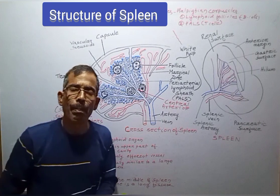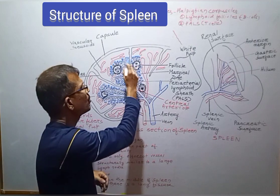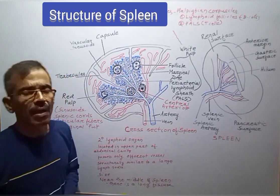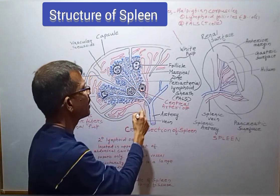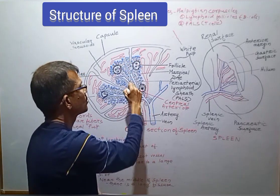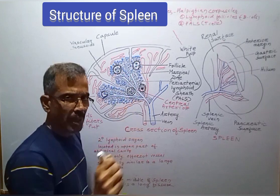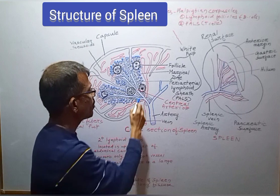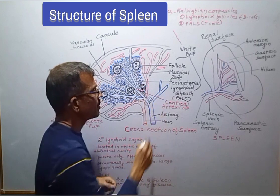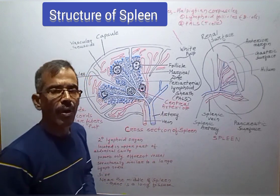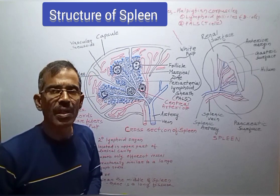White pulp mainly consists of lymphoid tissues. It is composed of many nodules called Malpighian corpuscles, which are composed of lymphoid follicles and peri-arteriolar lymphoid sheaths. These lymphoid follicles are rich in B-lymphocytes. Some of the follicles may also contain a germinal center; such a follicle is called a secondary follicle.